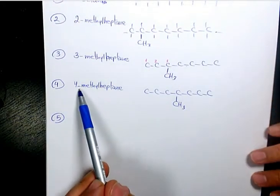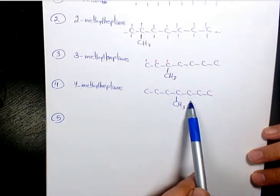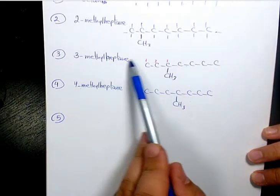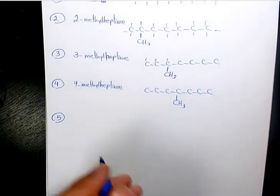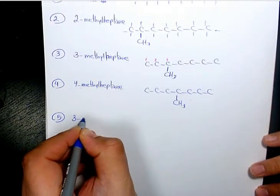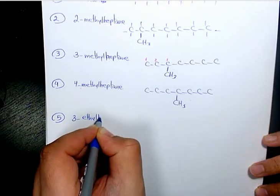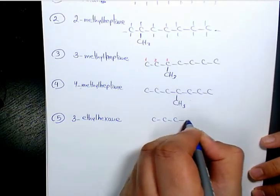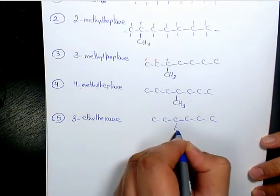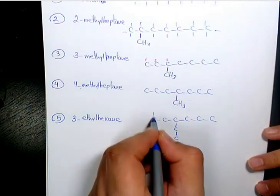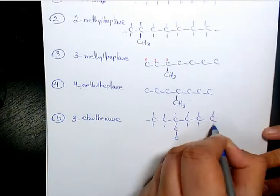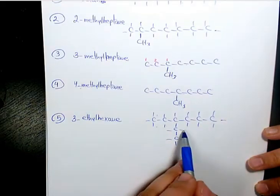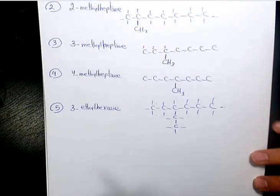Number five — obviously we cannot have 5-methylheptane, because if we go one more it means we need to start numbering from the other side, so it would just be 3-methylheptane again, which we already counted. The next one is going to be 3-ethylhexane: 1, 2, 3, 4, 5, 6 carbons on the main chain with an ethyl group on the third carbon, totaling 18 hydrogen atoms.